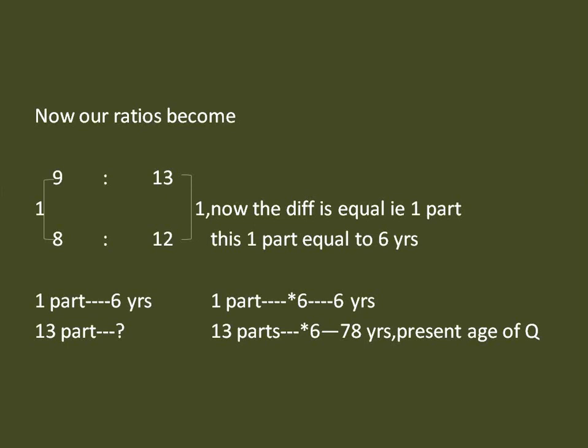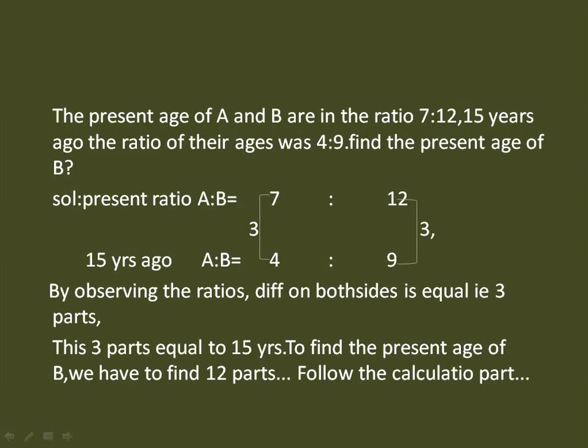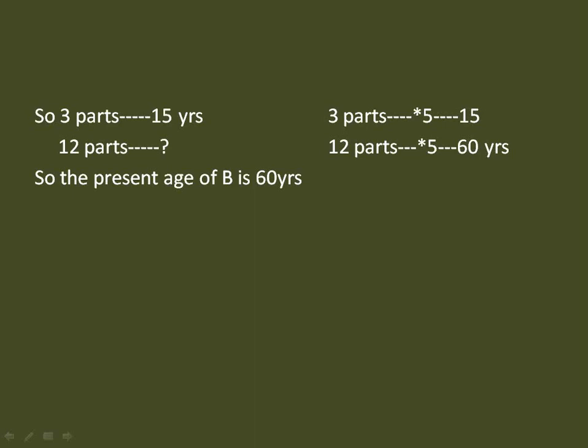Another problem: the present ages of A and B are in the ratio 7:12. Fifteen years ago the ratio was 4:9. Find the present age of B. Write the ratios 7:12 and 4:9. The difference on both sides is 3 — already equal. So 3 parts = 15 years. The relation between 3 and 15 is ×5. To find the present age of B (12 parts): 12 × 5 = 60 years.